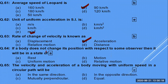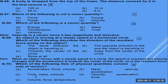If a body does not change its position with respect to some observer, it is said to be in the state of rest. The velocity and acceleration of a body moving with uniform speed in a circular path are mutually perpendicular — as we discussed.